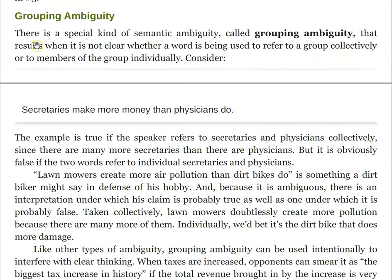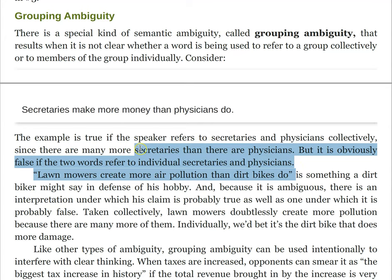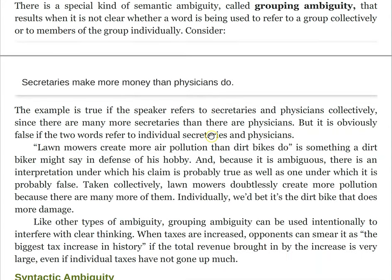There's also grouping ambiguity, which results when it is not clear whether a word is being used to refer to a group collectively or to members of the group individually. For example: 'Secretaries make more money than physicians do.' This is true if the speaker refers to secretaries and physicians collectively, since there are many more secretaries than physicians. But it's obviously false if the two words refer to individual secretaries and individual physicians. I wanted to point out grouping ambiguity because sometimes we're given statistics that might look like this, and they're only true in virtue of the grouping ambiguity that's going on.